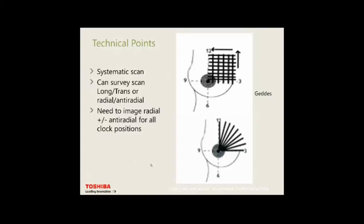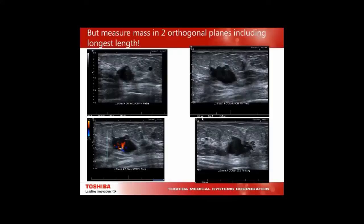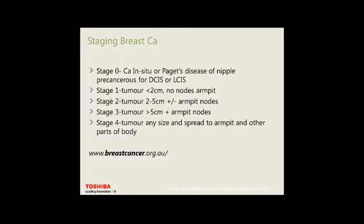We image all clock positions from 1 to 12 in a radial position. If we see a lesion, we always image and measure the mass in two orthogonal planes, including the longest length. If continuing only in radial, the lesion would measure only 16-17 mm, but once turned transverse and anti-radial, it's 23 by 22 mm. This significantly affects staging, so always take the longest axis of the tumour — that's what the pathologist uses when staging.